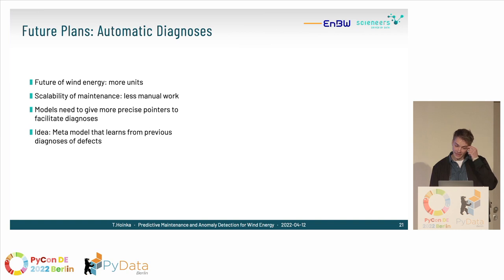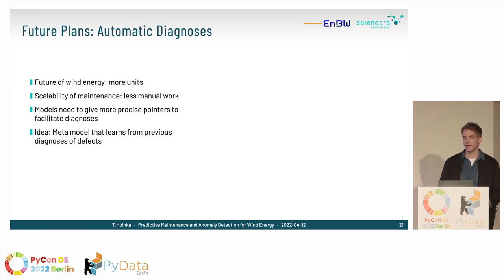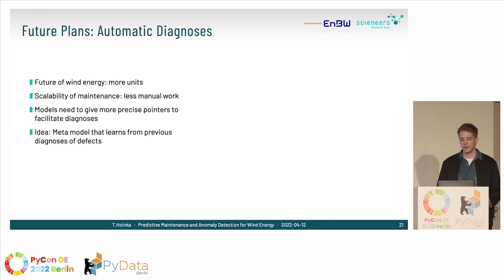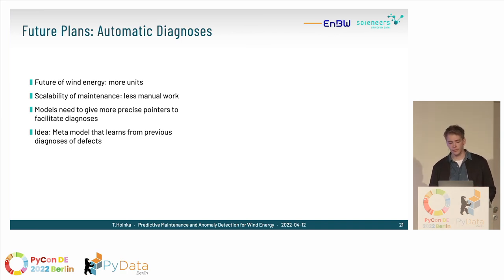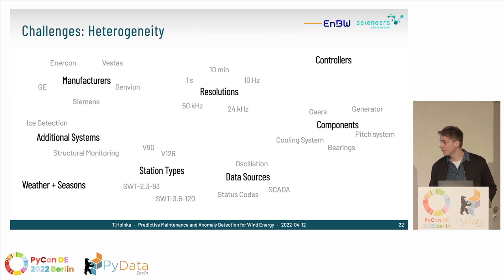Our future plan is automatic diagnosis. The problem is we have many units and very few diagnosticians, and expect even more units in the future. We need scalability — we can't linearly scale diagnosticians. What we need is a meta model that learns from previous defects and can match new anomalies with historical ones. There are huge challenges here: the diversity of turbine types, sensor configurations, and specifications — for instance, some turbines don't even have gears, so a gear failure diagnosis wouldn't apply to them.